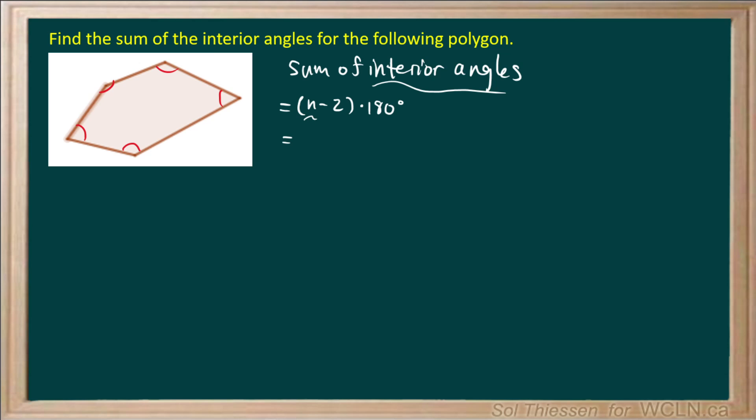If we count up the number of sides, we'll see that we have 1, 2, 3, 4, 5. If we plug that into our formula, we'll have 5 minus 2 times 180 degrees, which is 3